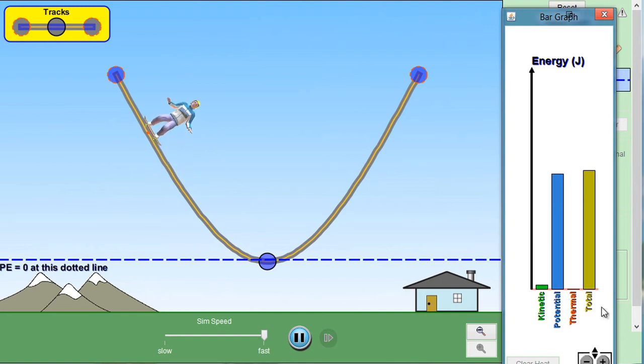Notice two other parts of the graph. Thermal energy related to heat. Right now there is no friction, so there is no generation of thermal energy. And notice total energy is the sum of all three of these other energies.